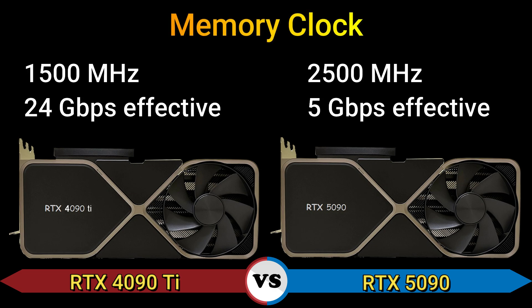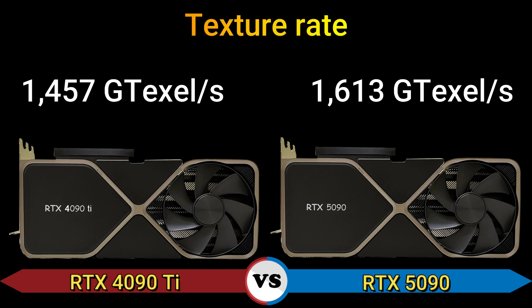Memory clock: 1500 MHz, 24 GB/s effective, and 2500 MHz, 5 GB/s effective. Texture rate: 1457 GT/s and 1613 GT/s.